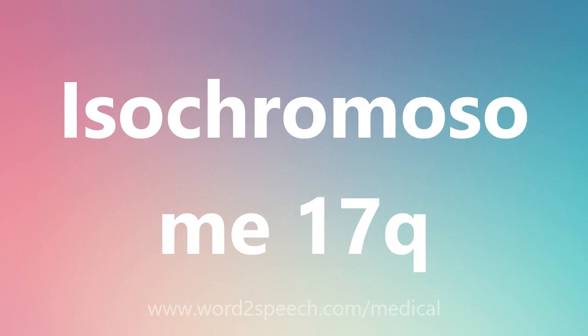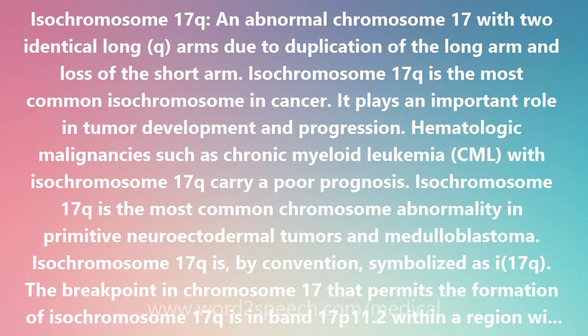Isochromosome 17Q — an abnormal chromosome 17 with two identical long Q arms, due to duplication of the long arm and loss of the short arm. Isochromosome 17Q is the most common isochromosome in cancer.